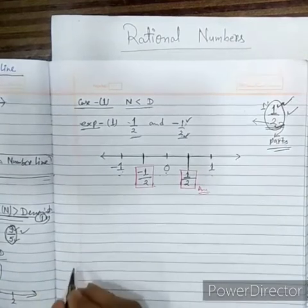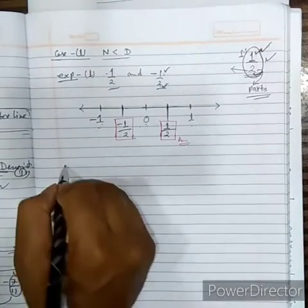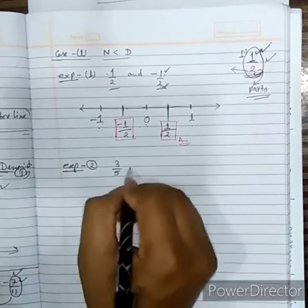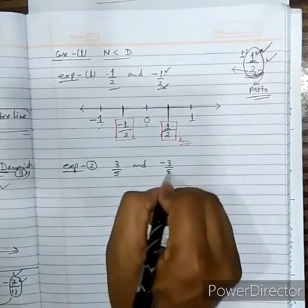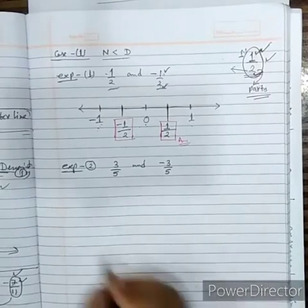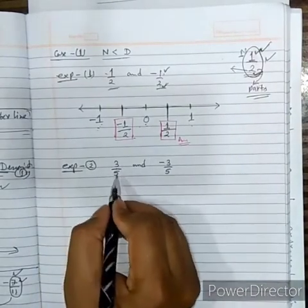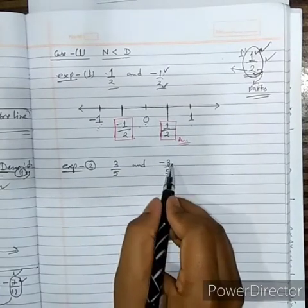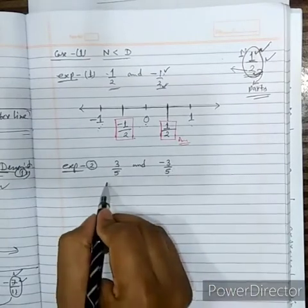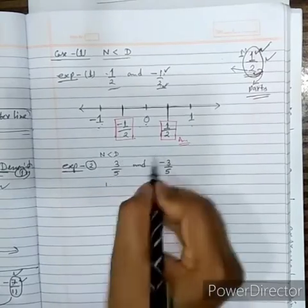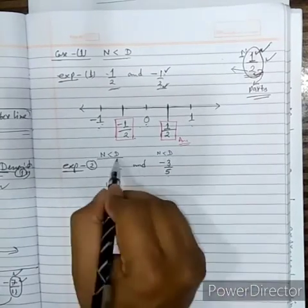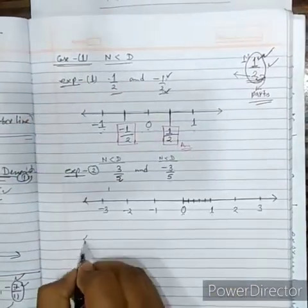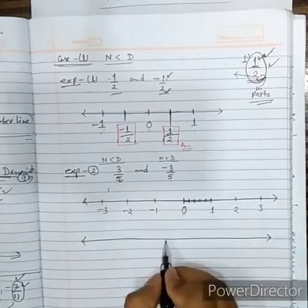Similarly, we take another example: 3 by 5 and minus 3 by 5. Since numerator 3 is less than denominator 5 for both, they both lie in the first case. For 3 by 5 it is positive, and for minus 3 by 5 it is negative, so they satisfy the first condition.